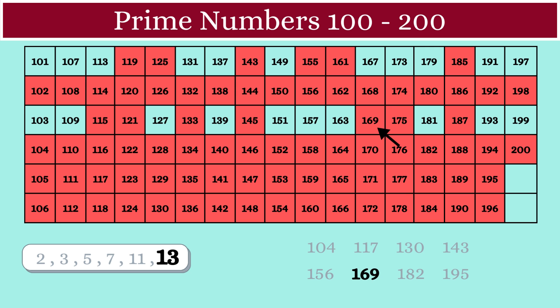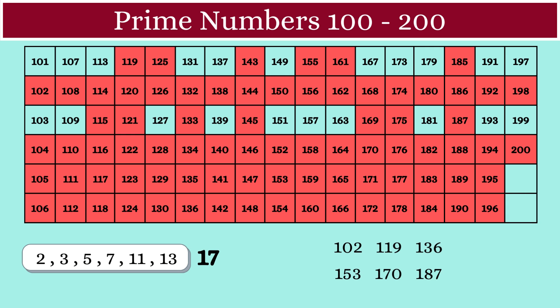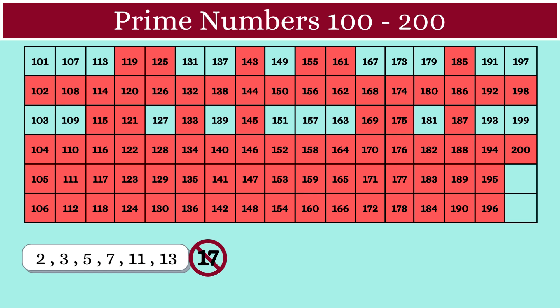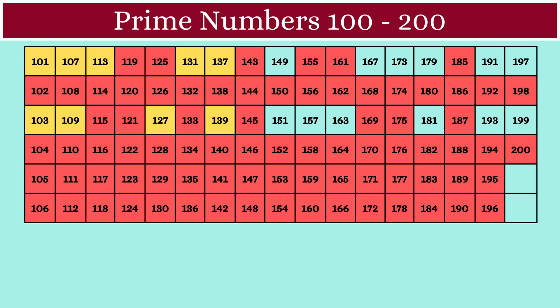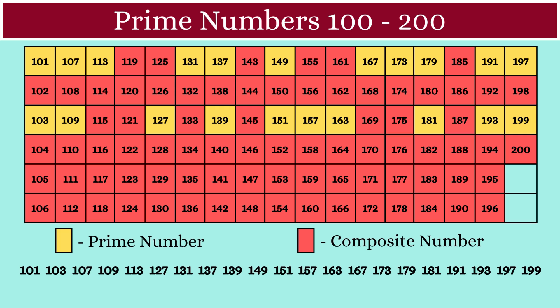Now, the next prime number in our list would be 17. If you note carefully, all its multiples are already marked as composite numbers. So we can stop here and mark all the remaining unmarked numbers as prime numbers. In total, we have 21 prime numbers between 100 and 200.